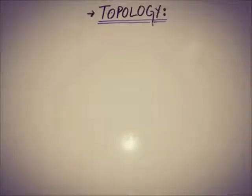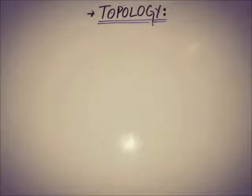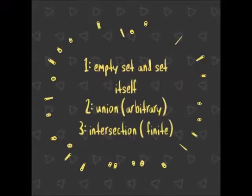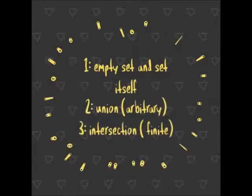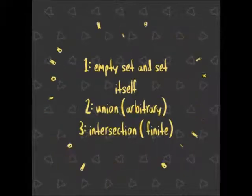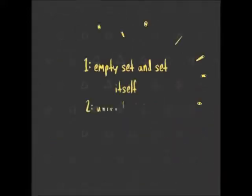Hello everyone, this is DG from eAcademy. Hope you guys are doing well. Today in this video we will show how to verify a collection of subsets as a topology — that is, we will verify using three basic properties of being a topology on any non-empty set. The very first property is that the non-empty set and X itself belong to the topology, the second is the union of arbitrary members, and the third is the intersection of finite members.